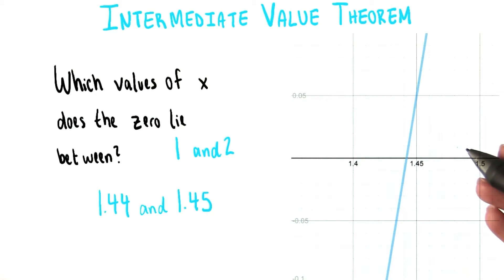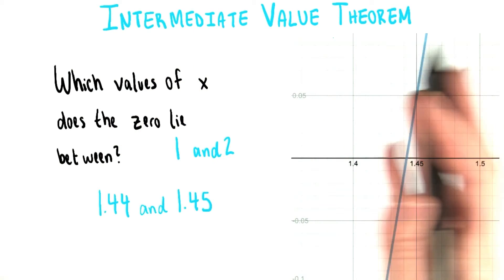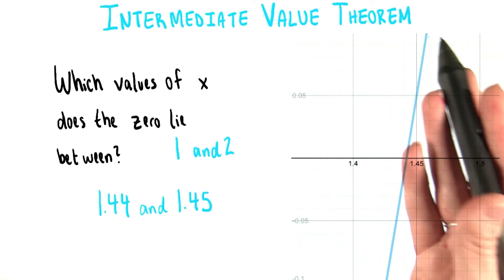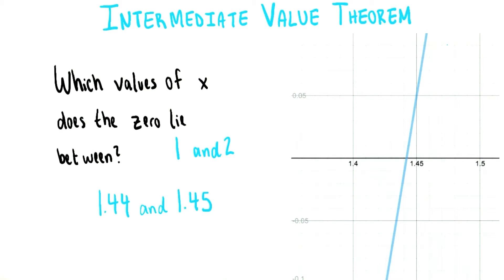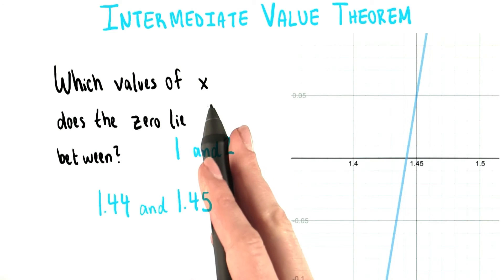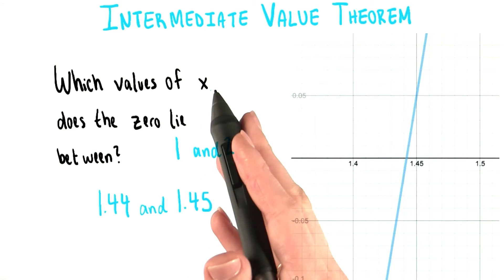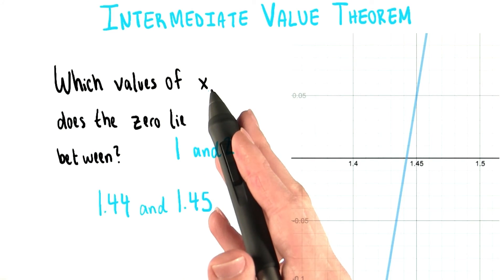So the more information we have, the better the Intermediate Value Theorem can help us come up with a really close answer, or a really close approximation for x.